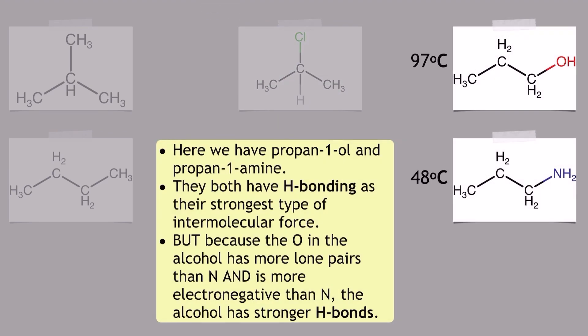Moving over to the right hand side and you can see here we've had quite a big jump in the boiling point values. We've got an alcohol of propan-1-ol at the top that has a 97 degree C boiling point and then we've got propan-1-amine just below it which is an amine and that has a 48 degree C boiling point.